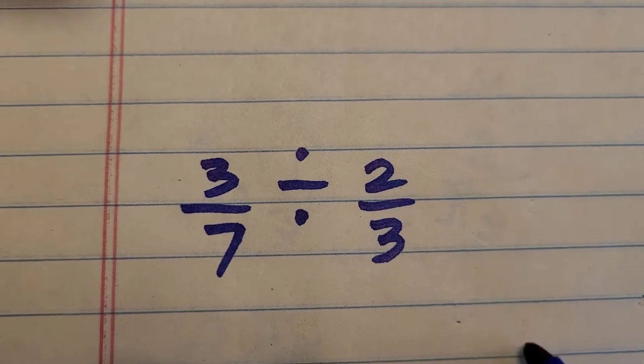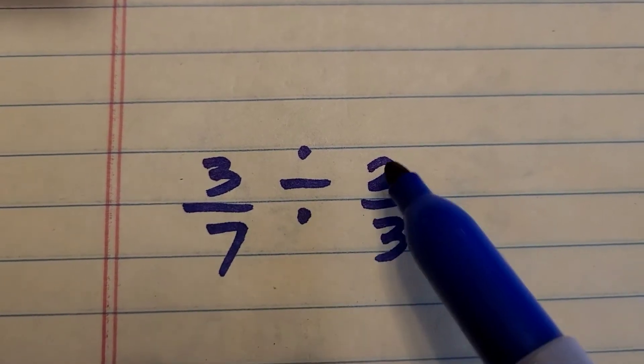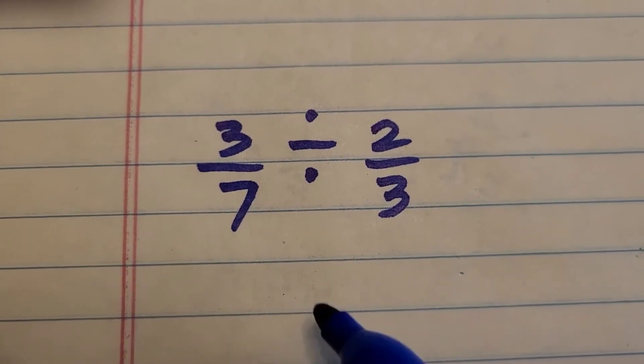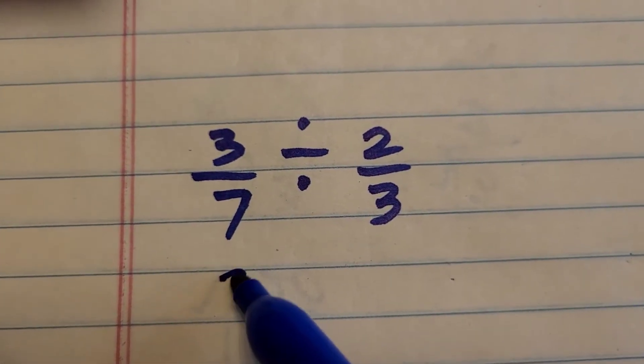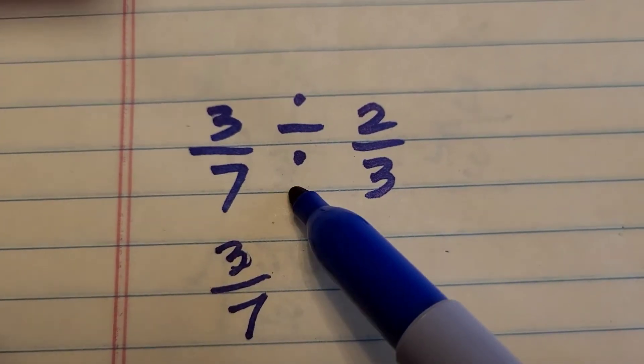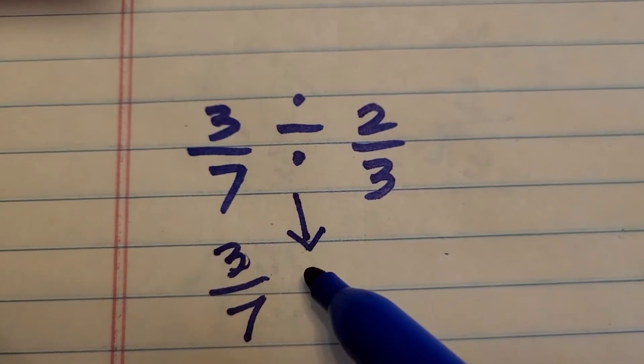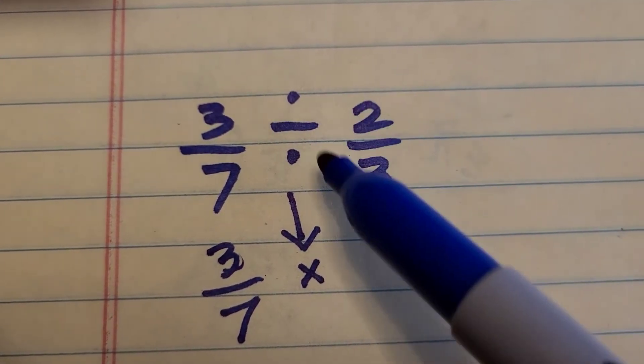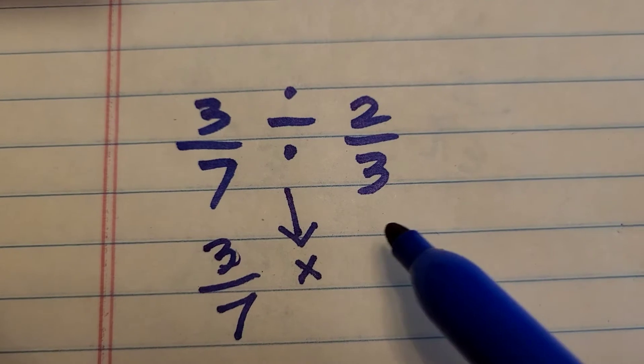In this example, as you can see here, we have 3/7 divided by 2/3. Now the traditional method to do this: we would take 3/7 and change the division sign to multiplication, and we take the reciprocal or flip the second fraction.